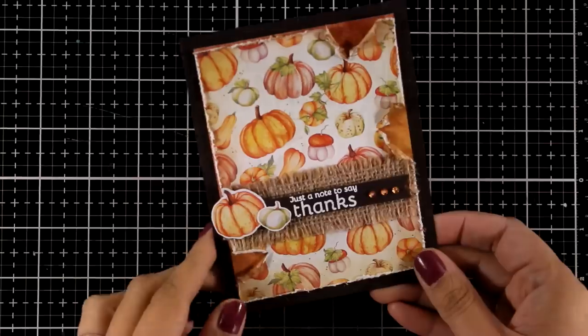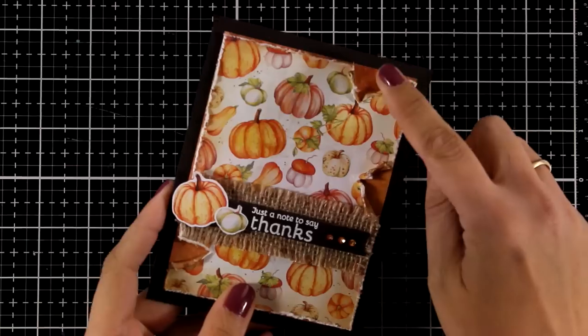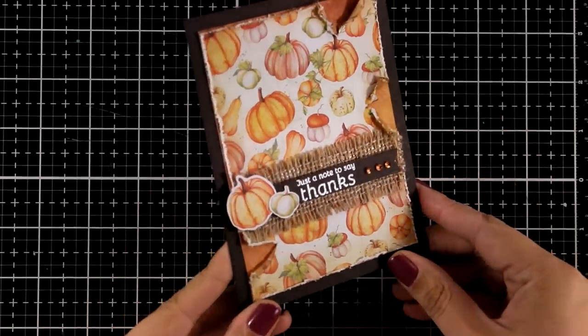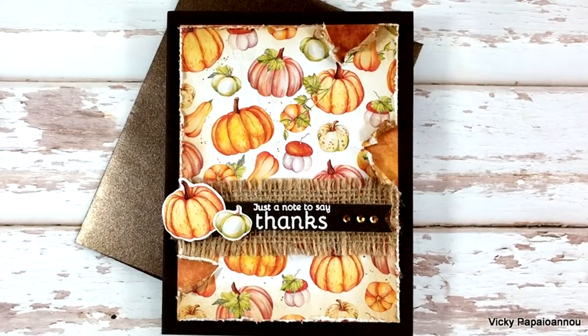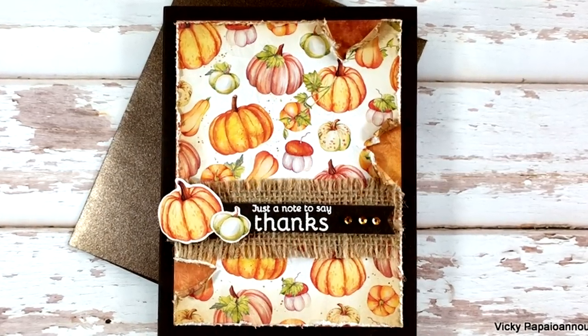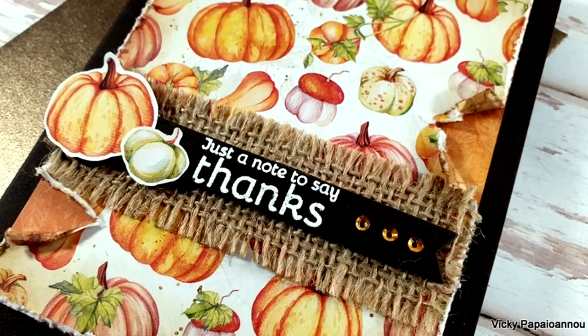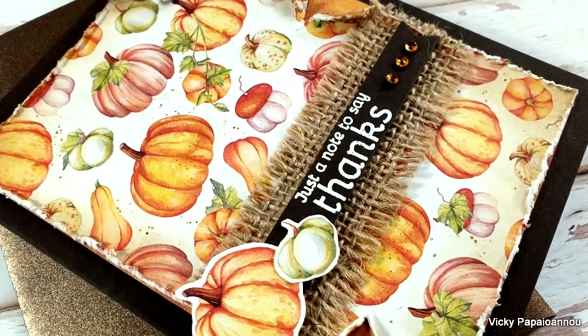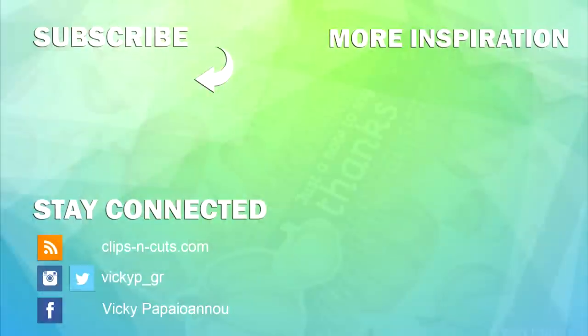And here is a close-up look on the finished card using products from the latest card kit by Simon Says Stamp. If you like you can have sequins coming through those notches for some extra sparkle, and here are some close-up photos on the card that I showed for today. If you want a chance to win this card kit I do have a giveaway on my blog, make sure to visit and leave me a comment there. I hope that you had fun today, that you got inspired. Thank you all so much for watching and I'll see you all next time.